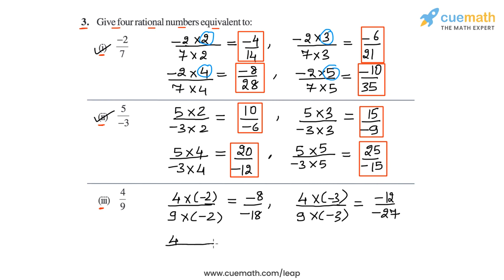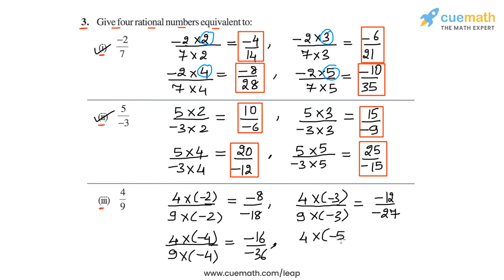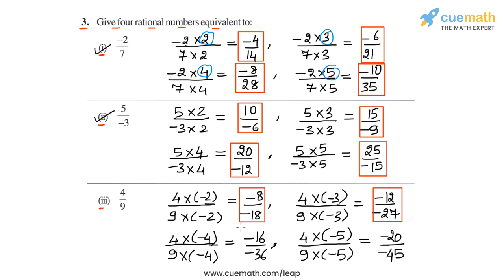Next we use the multiplier minus four in the numerator and denominator, and this gives us the rational number minus 16 by minus 36. And then for the fourth equivalent rational number, let's take minus five as a multiplier. So we have four into minus five by nine into minus five, and this will give us minus 20 by minus 45. So the four equivalent rational numbers we have obtained for four by nine are minus eight by minus 18, minus 12 by minus 27, minus 16 by minus 36, and minus 20 by minus 45.